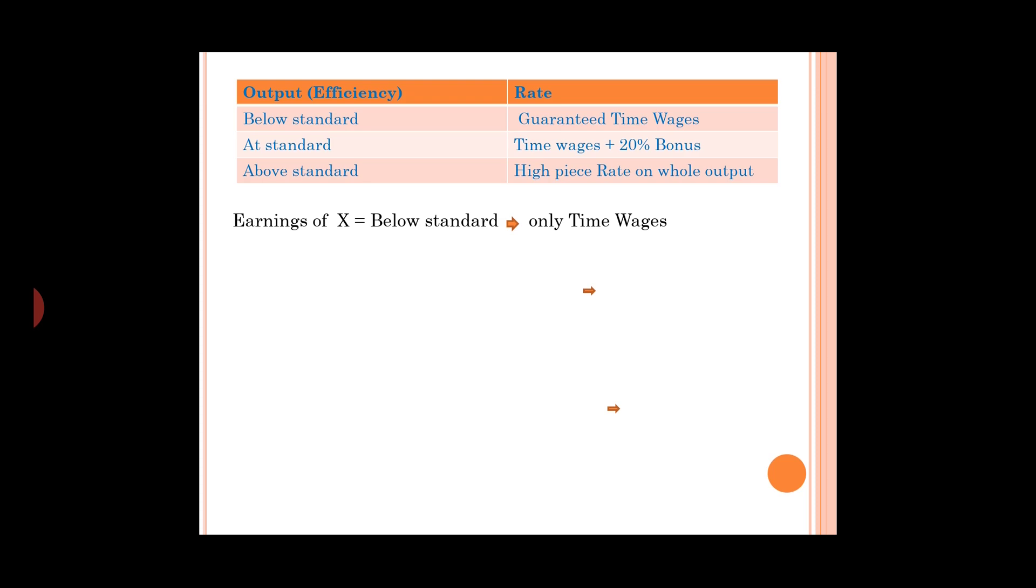Earnings of X: below standard, only time wages. Time wages is 8 hours into 15 equals 120.